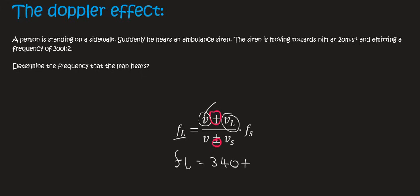The velocity of the listener—the person standing—is zero because they're not moving. The velocity of sound in air is 340. Then we subtract the velocity of the source, which is the ambulance at 20 meters per second, and multiply by the frequency of the source, which is 200 hertz.